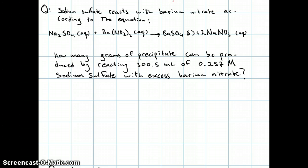How many grams of precipitate can be produced by reacting 300.5 milliliters of 0.257 molar sodium sulfate with excess barium nitrate?